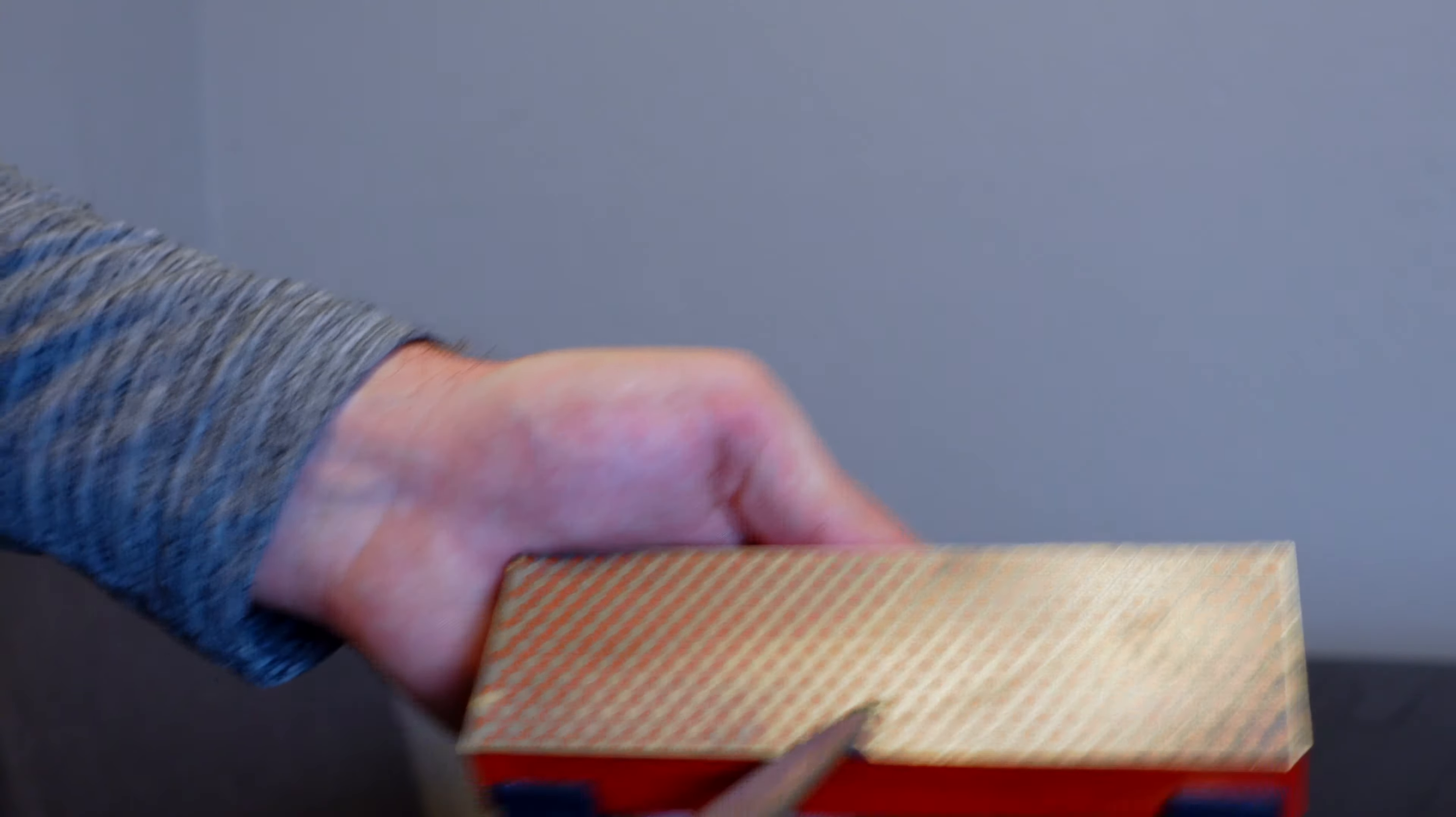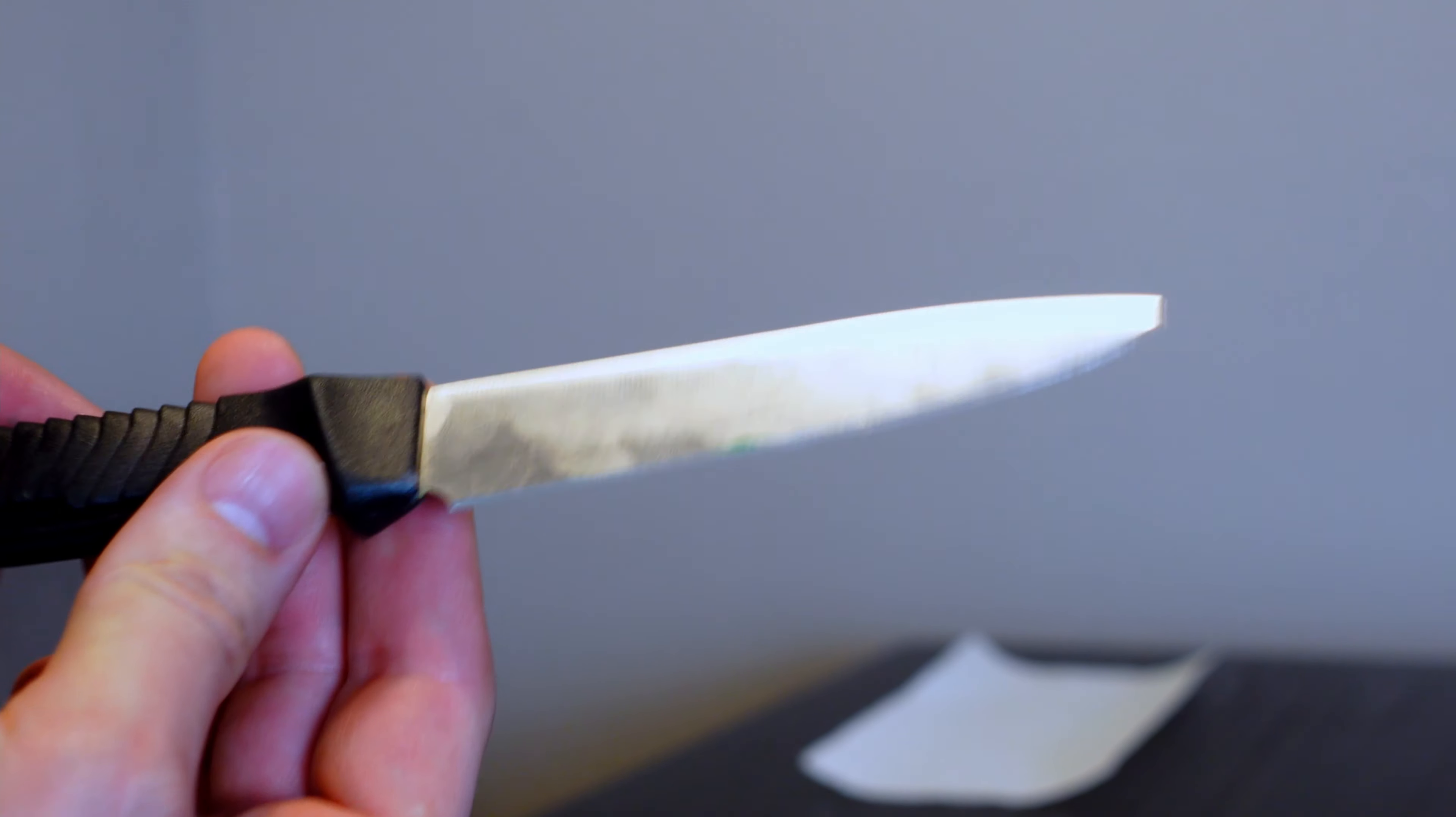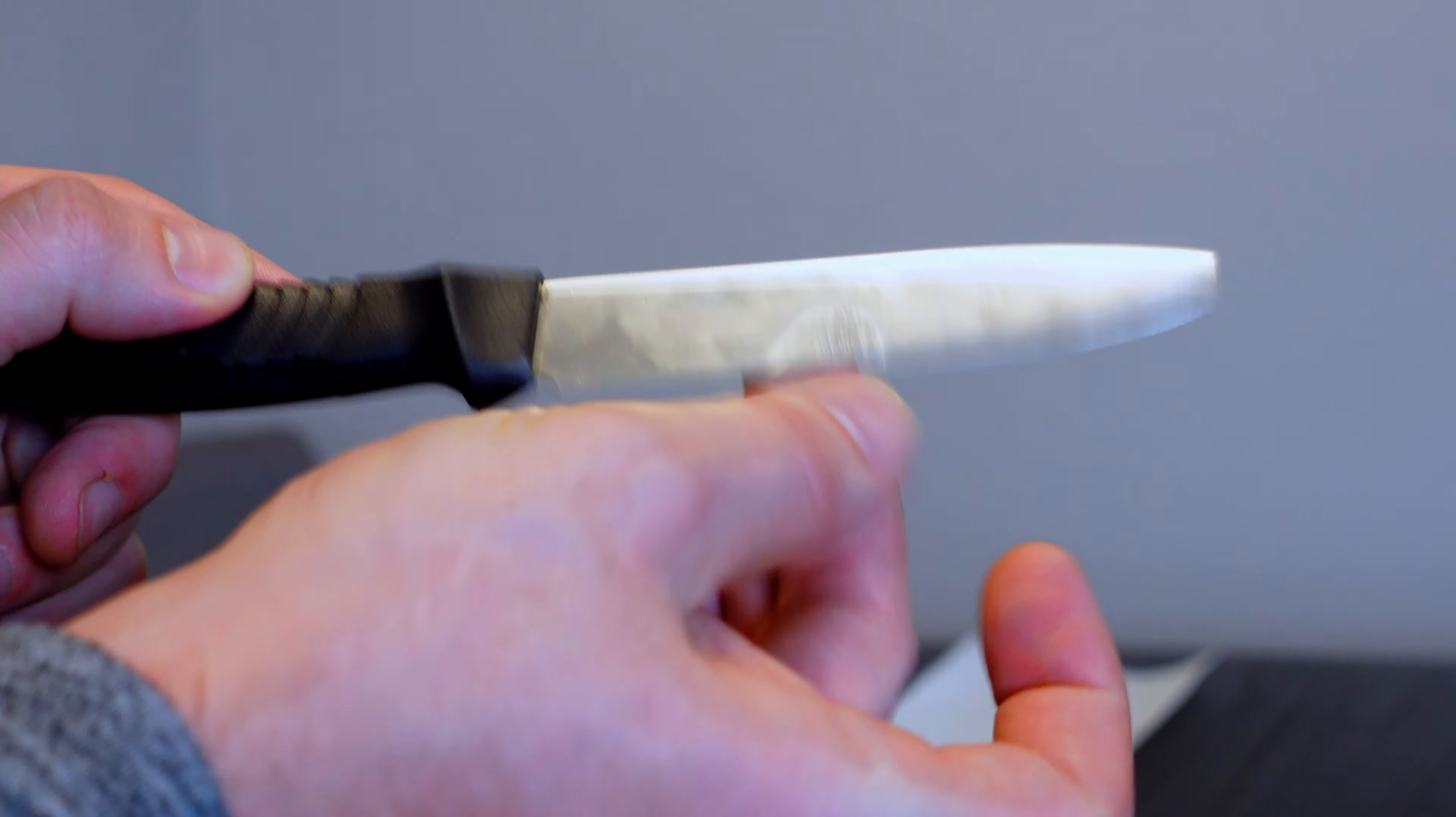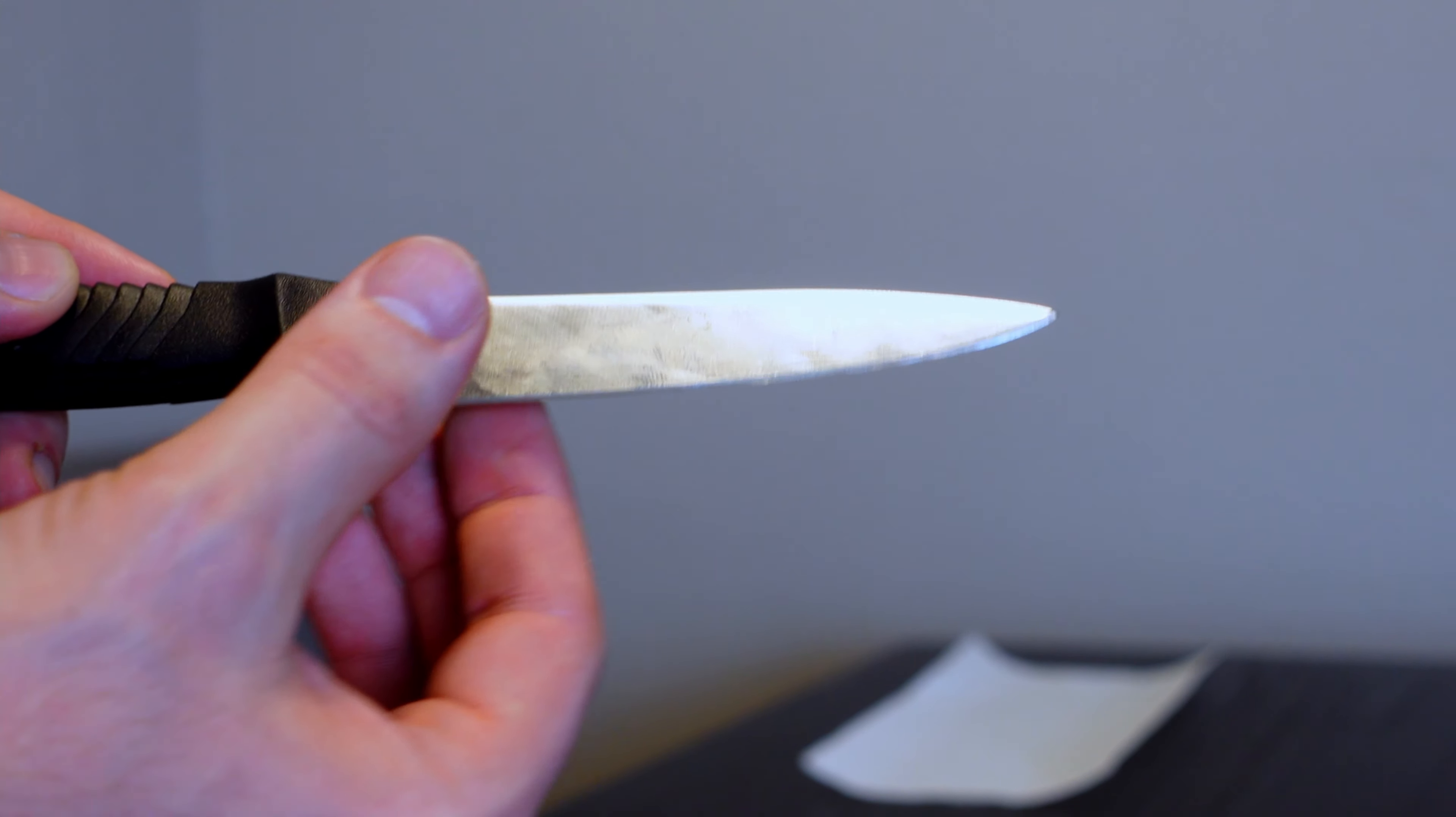I'm just going to run this a couple times. We'll see how we're doing here. All right, so let's look at what I did here. Looks like I pretty much took off pretty evenly the marker. Now this is just extra marker right there that I kind of got on the shoulder of the blade. But in this case, I was pretty much right on with the angle.